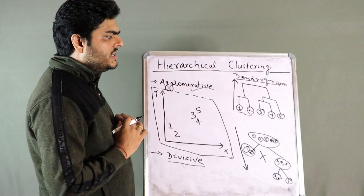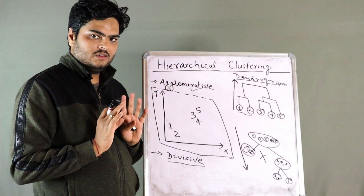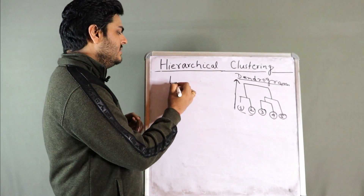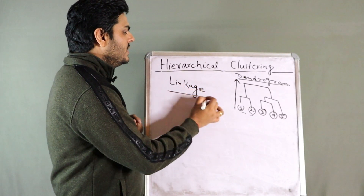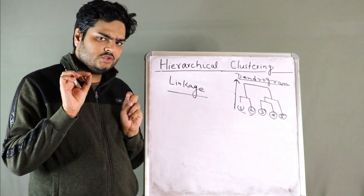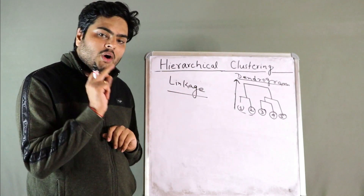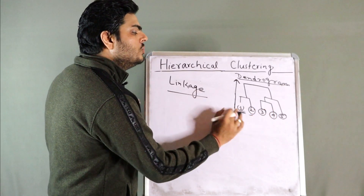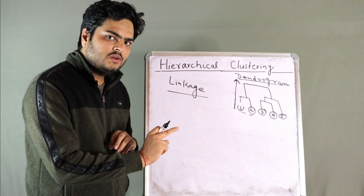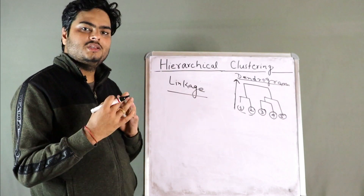The next important thing to understand is: what are the important parameters when you call this method in Python? The most important parameter is known as linkage. Linkage tells you how do you get the answer to those questions — shall I merge one and two together or shall I merge three and four? There are mathematical calculations going on inside using this linkage function, and there can be different types of linkage.